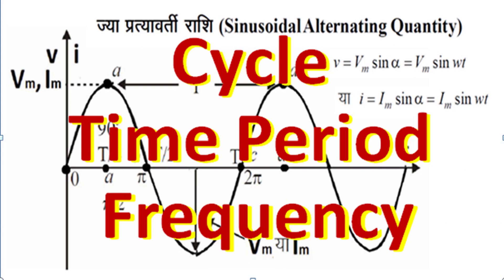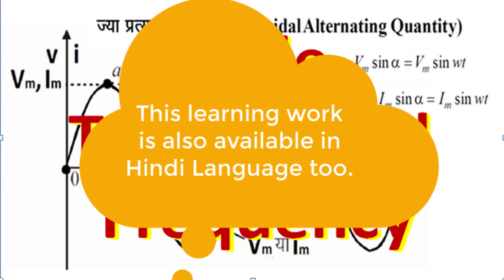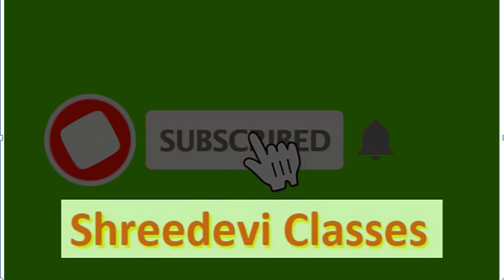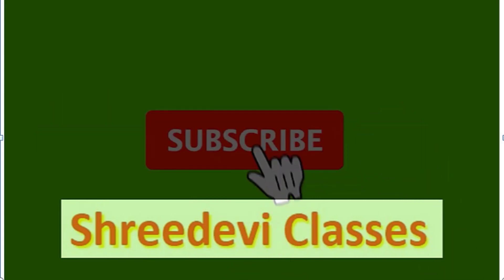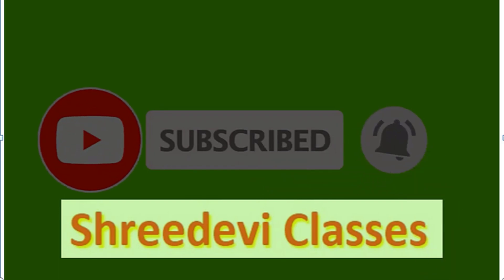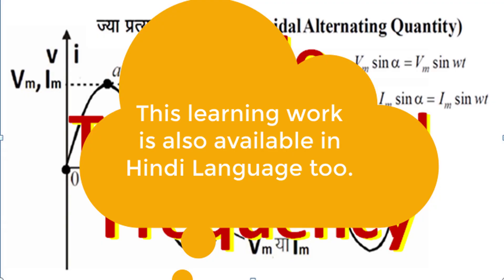Hello, I Anand Jain from Hanmangat Rajasthan welcomes you to your favorite Shridevi Classes YouTube channel where we inculcate interest as well as confidence in science and engineering subjects. Today in basic electrical engineering, in chapter AC circuits, we'll understand fundamental concepts of sinusoidal alternating quantities, learn cycle, time period and frequency, and also understand the concept of harmonics for a non-sinusoidal periodic wave.